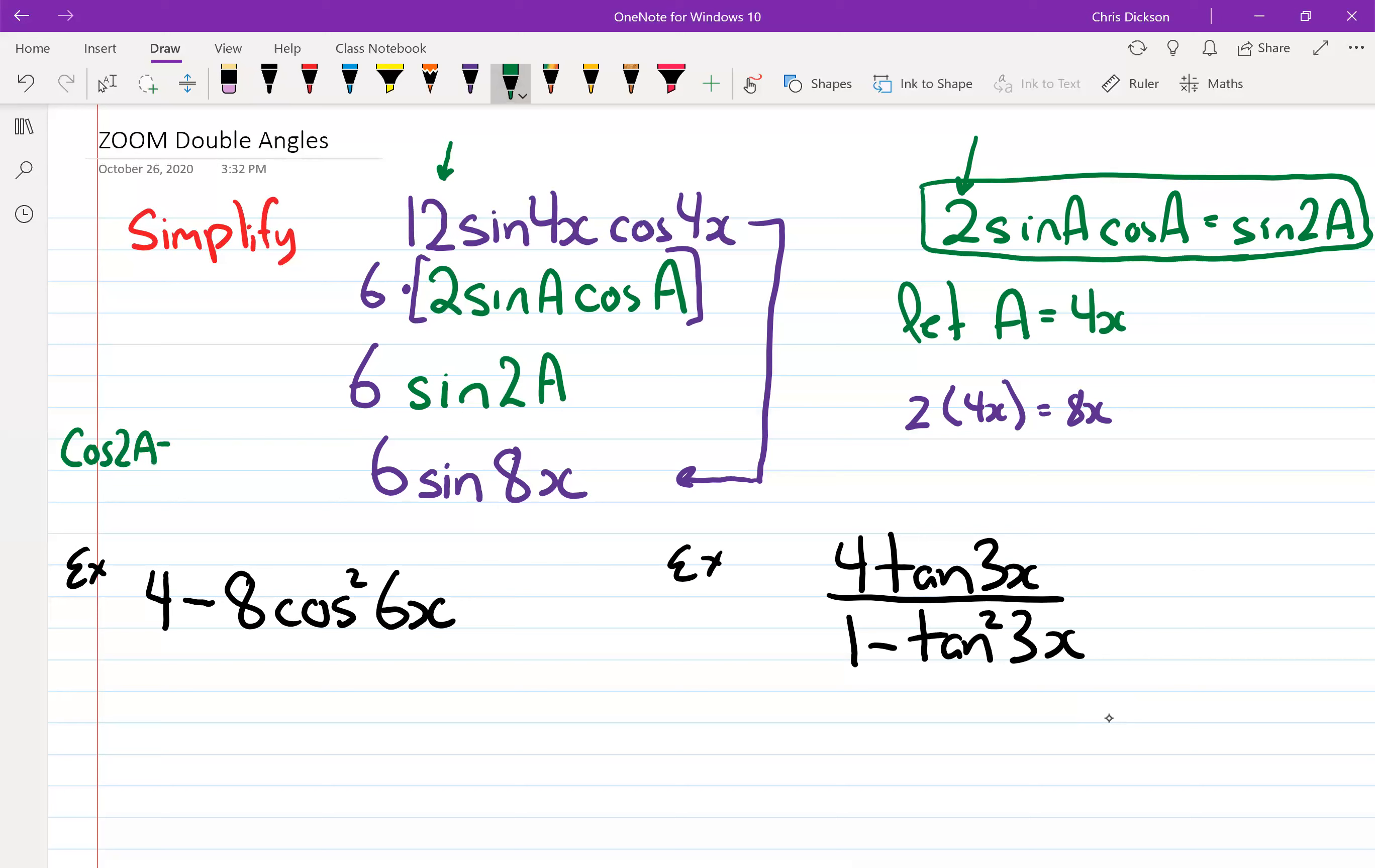Now cos 2a, you'll notice, has three separate identities, so you don't need to memorize them, you got to recognize them. And so this looks a lot like the one that starts off with cos in it. So we have 2 cos squared a minus 1. So see if you can find that on your formula sheet.